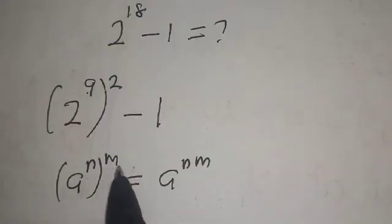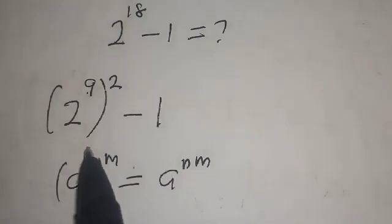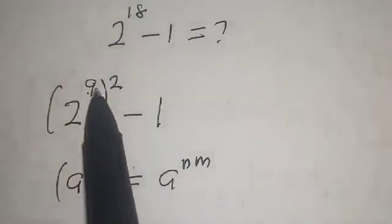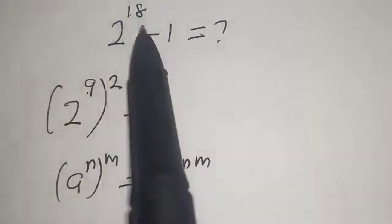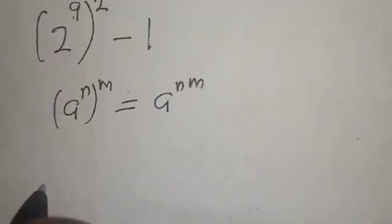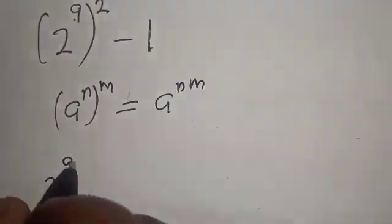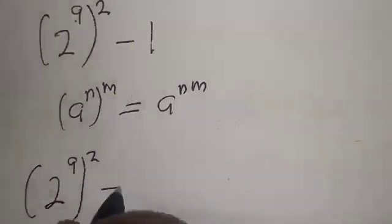Using the rule a raised to power n raised to power m equals a raised to power nm, if you multiply 9 times 2 it gives you 18 back. Now we have 2 raised to power 9 squared minus